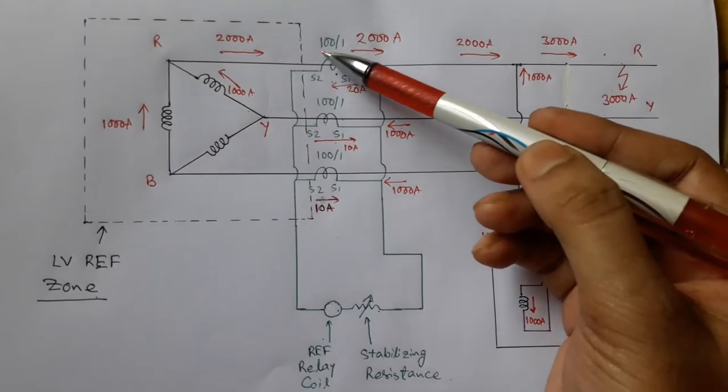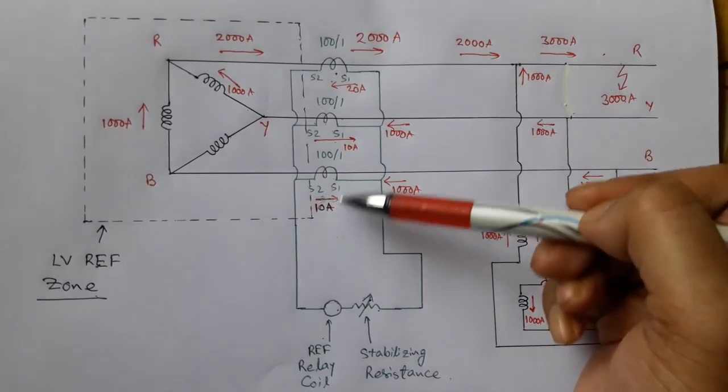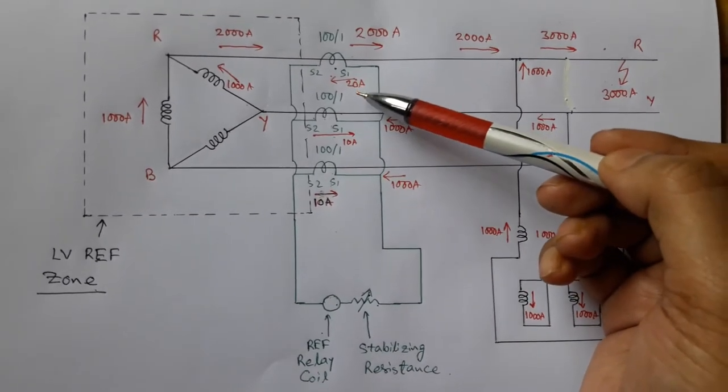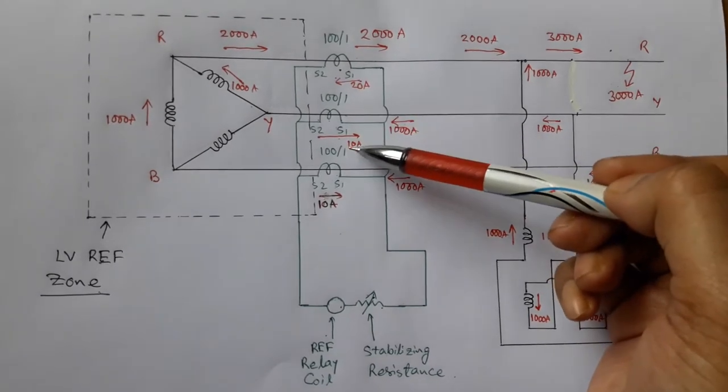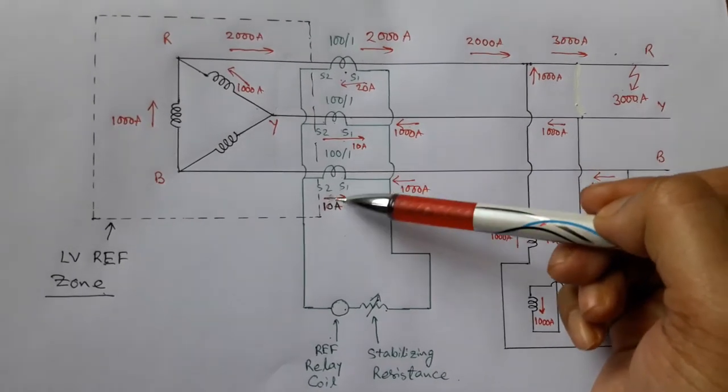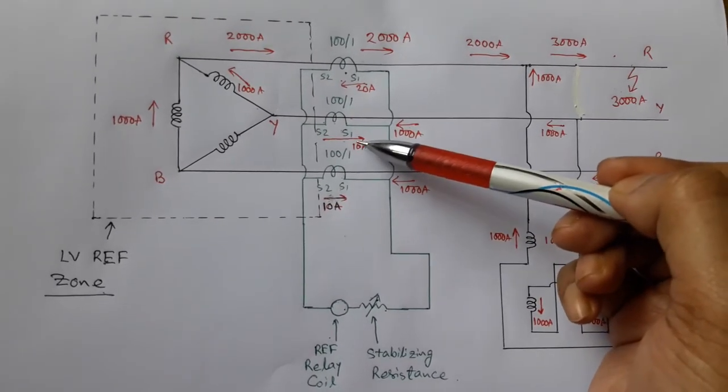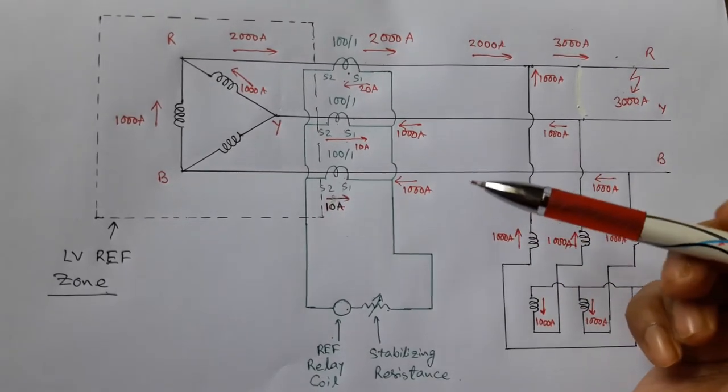As the CT ratio is 100 by 1 ampere, these are secondary values of currents. So in the case of the secondary circuit, red phase secondary current is also double the values in yellow and blue phases. And the direction of red phase secondary current is also opposite to the direction of yellow and blue phase secondary currents.